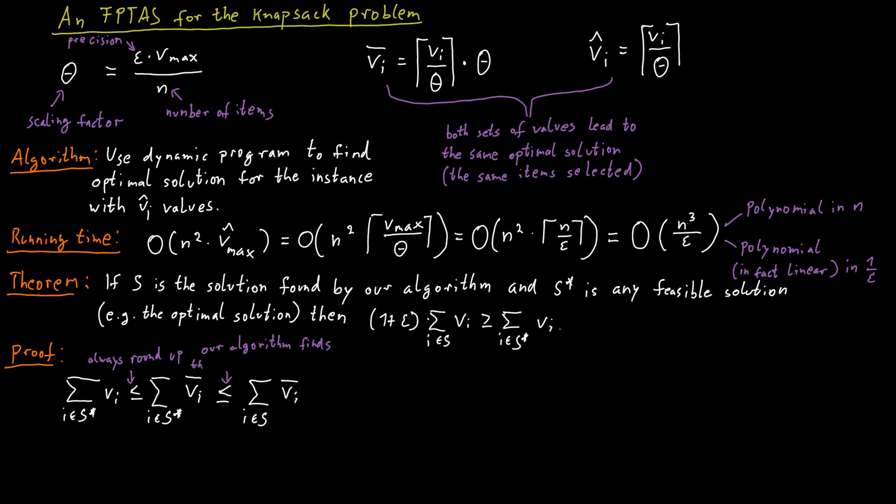And the third observation is that when we round up, we are not going to change any number by more than theta. Coming back to our first example, if we round up to multiples of 100,000, what this simply says is that we will not change any number by more than 100,000 in absolute terms. So for example, if we have a number of 120,000, we will round it up to 200,000. So it really only changes by 80,000.